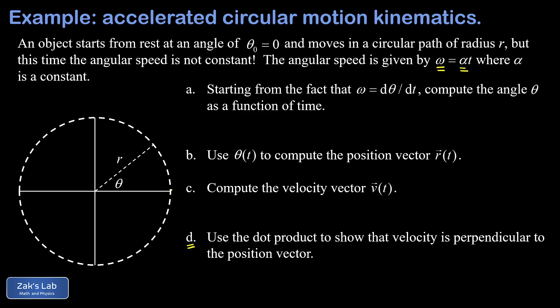We're told that theta naught equals zero, which simplifies the equations. We're told that the angular velocity is linearly increasing, so we can say that omega is alpha times t, where alpha is a constant. And we're given this clue in part a: starting from the fact that omega is the time derivative of the angle, compute the angle as a function of time.